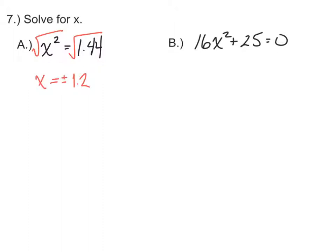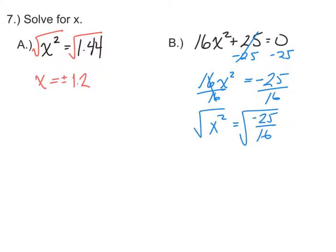For 16x squared plus 25, we have to get the x squared alone first. So we'll subtract 25, and then divide by 16, before taking the square root. And when we take the square root, this will still be x. And on the right side, the square root of negative 25 is 5i, and the square root of 16 is 4.